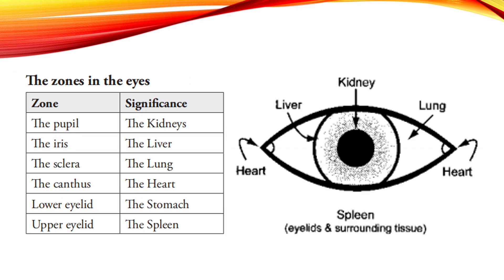The eyes can be divided into different zones, as with the ears, feet, and other parts of the body. When there are color changes in these areas of the eye, this can tell us something about the corresponding zang fu organ. It is important to remember, though, that the condition of other organs may also affect these areas.